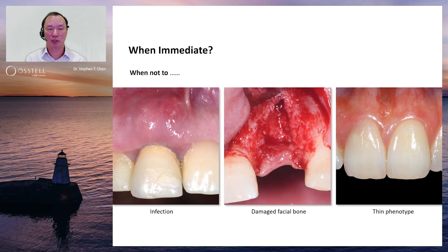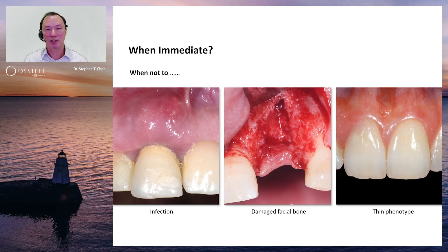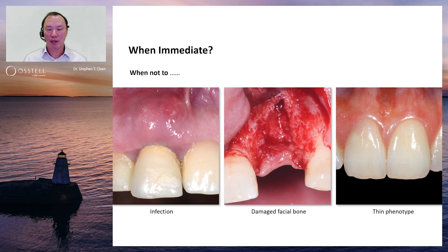When should we not place an implant immediately? With acute infection, the tooth should be extracted and the area allowed to heal before implant placement. Chronic infection and draining fistulas are debatable — the presence of a fistula likely indicates damage to the facial bone, making it preferable to allow pathology to resolve before implant placement due to the risk of an infective issue compromising the outcome. Damage to the facial bone and thin phenotype cases are strong contraindications for immediate implant placement.